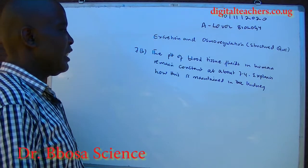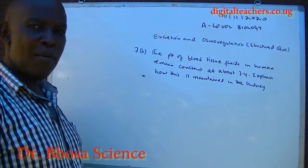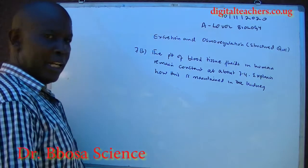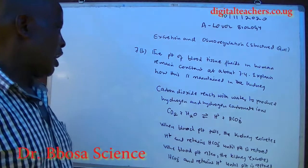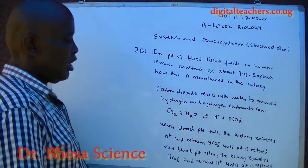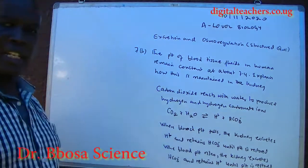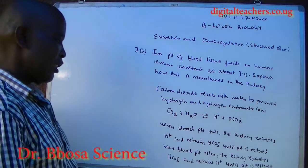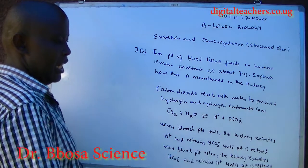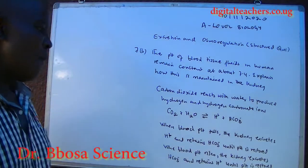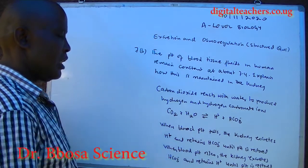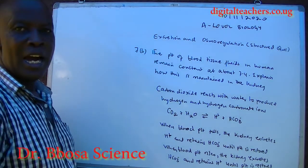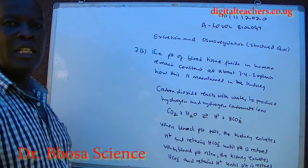Seven B: the pH of blood tissue fluids in humans remains constant at about 7.4. Explain how this constant is maintained by the kidney. Carbon dioxide reacts with water to produce hydrogen and hydrogen carbonate ions. When blood pH falls, the kidney excretes hydrogen ions and retains hydrogen carbonate ions until pH is restored. When blood pH rises, the kidney excretes hydrogen carbonate ions and retains hydrogen ions until pH is restored.